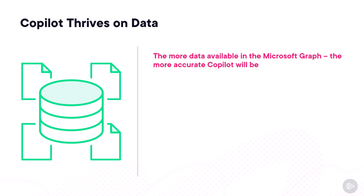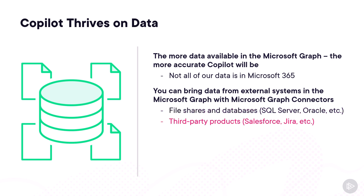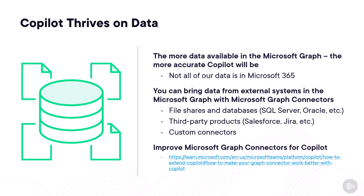Copilot thrives on data, and the more data available in the Microsoft Graph, the more accurate and useful Copilot will be. For most organizations, not all data is in Microsoft 365, but you can bring data into the Microsoft Graph using Microsoft Graph connectors — from file shares, databases, third-party products, or even custom connectors. Microsoft has specific documentation on how to optimize Microsoft Graph connectors for Copilot at the link in the slides. Every piece of data you bring in — documents, customer information, product information — will make Copilot more useful.